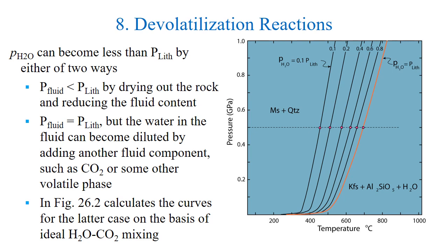The partial pressure of the water can become less than the lithostatic pressure by either of two ways. One, the pressure of the fluid is less than the lithostatic pressure by drying out the rock and reducing the fluid content. Or, the fluid pressure equals the lithostatic pressure, but the water in the fluid can become more diluted by adding another fluid component, such as carbon dioxide or sub-volatile phase. In Figure 26.2, we look at the calculated curves for the latter case on the basis of ideal water-carbon dioxide mixing.